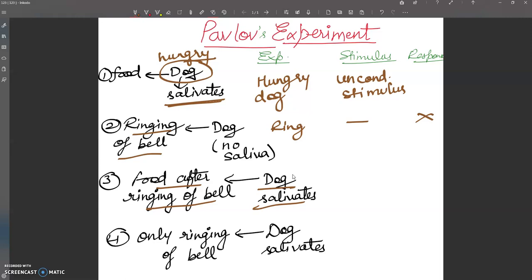The stimulus here is the bell given just before the unconditioned stimulus. This means salivation in dog occurs when food is given. The dog learns to associate the food with ringing - the dog felt that when the bell rings, food will be given.